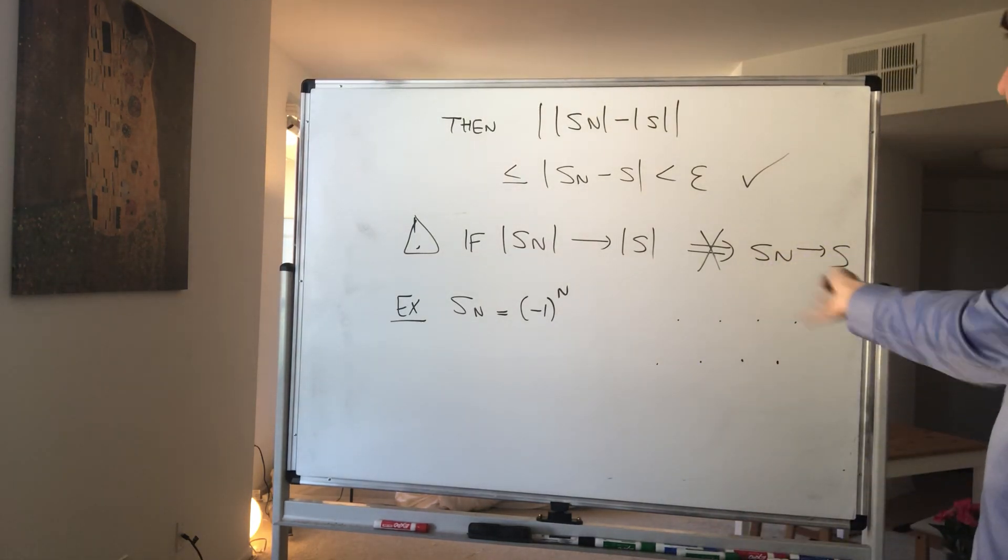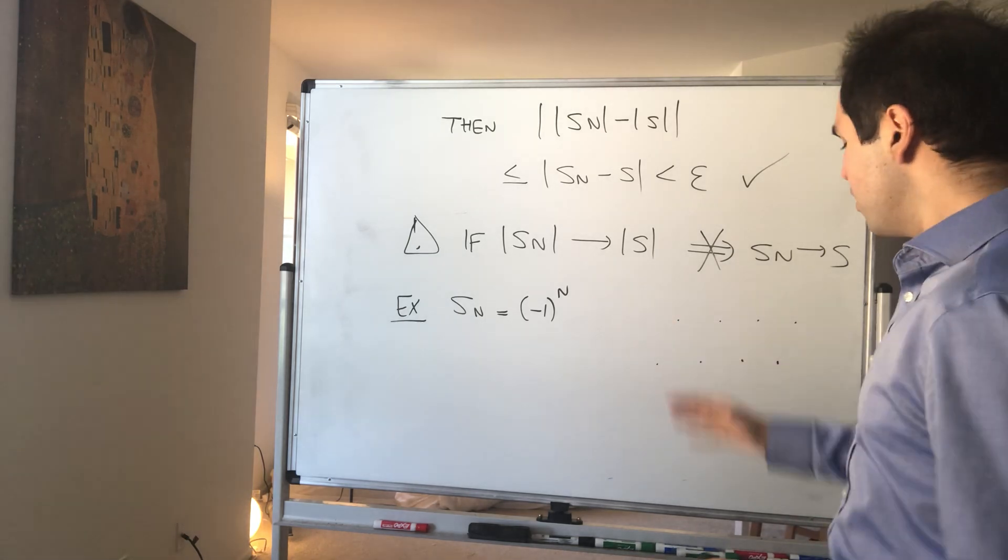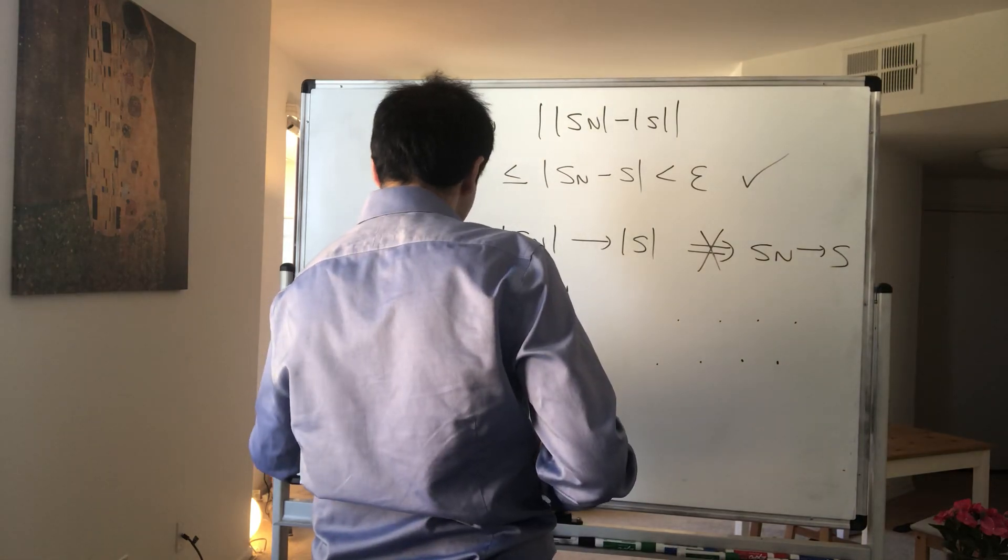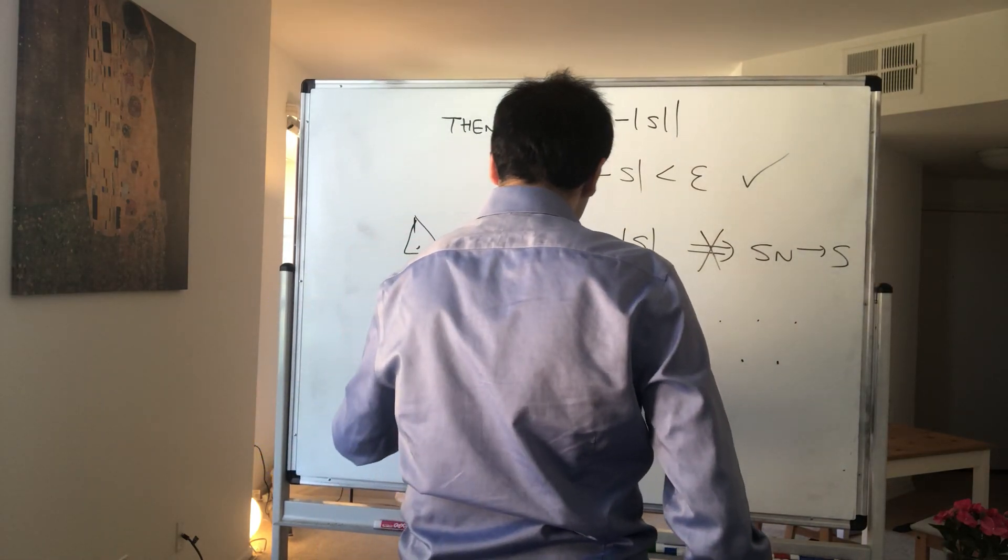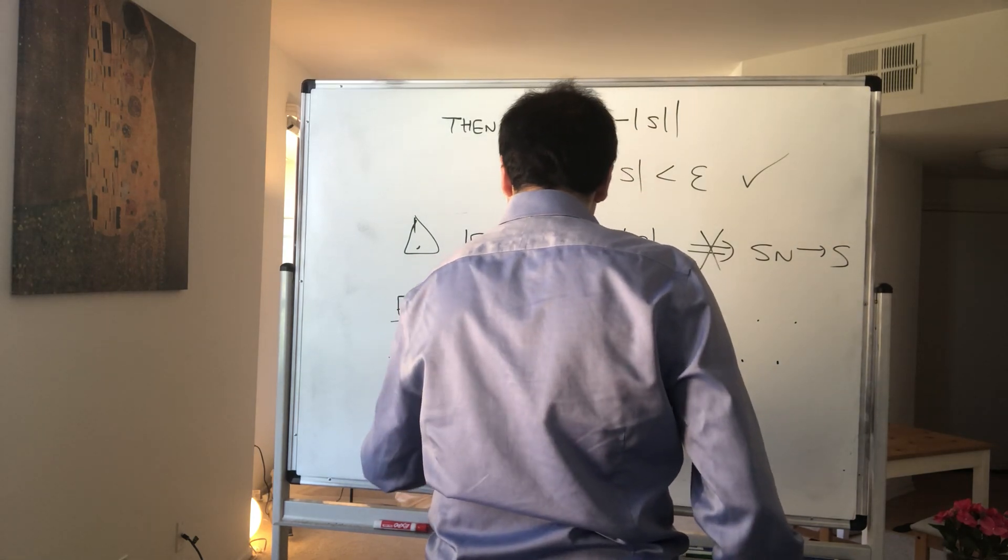And of course, s_n doesn't converge, right? But on the other hand, if you take absolute value of s_n, well, that is the absolute value of (-1)^n, but this is one.